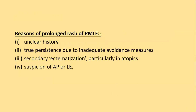Reasons for prolonged rash in polymorphic light eruption include: unclear history, true persistence due to inadequate avoidance measures, secondary eczematization particularly in atopics, and suspicion of associated actinic prurigo or lupus erythematosus.